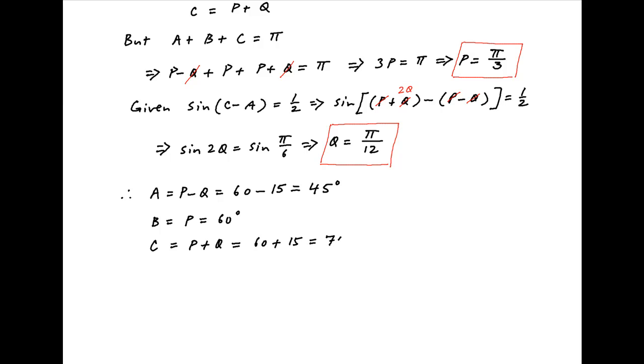Angle B is equal to P, which is π upon 3 or 60 degrees. And angle C is equal to P plus Q, which is 60 plus 15 or 75 degrees. And these are the required answers.